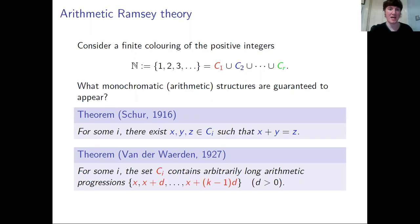Schur's theorem tells us that no matter how we colour the positive integers, there must exist x, y and z all the same colour such that x plus y equals z. Van der Waerden's theorem tells us that there are arbitrarily long monochromatic arithmetic progressions. For every positive integer k there exists a monochromatic set of the form x, x plus d, all the way up to x plus k minus 1 times d — a k-term arithmetic progression with common difference d.